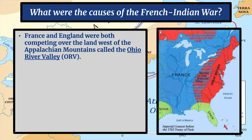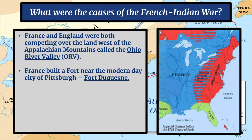France and England were both competing over the land west of the Appalachian Mountains, called the Ohio River Valley. You can abbreviate it as the ORV in your notes. Both France and Great Britain were competing for this land. The 13 colonies were looking to move westward across the mountains, and France was looking to lay claim to that land because the French were fur trappers and wanted to trap fur in that area. France built a fort near modern-day Pittsburgh, Pennsylvania, called Fort Duquesne.